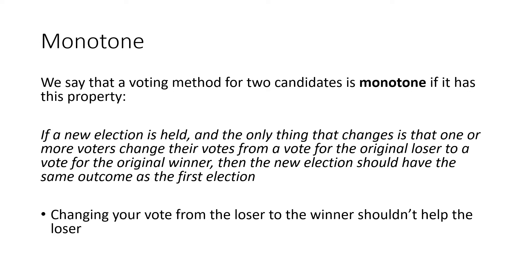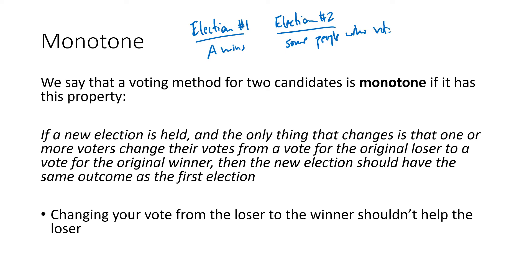Monotone is a little harder to understand, but it's also an intuitive fairness idea. A voting method is monotone if, in a new election where the only thing that changes is that one or more voters change their vote from a vote for the original loser to a vote for the original winner, the new election should have the same outcome. So if A wins election one, and in election two some people who voted for B now vote for A, monotone says A should still win — A got even more votes than before, so A should still be the winner.